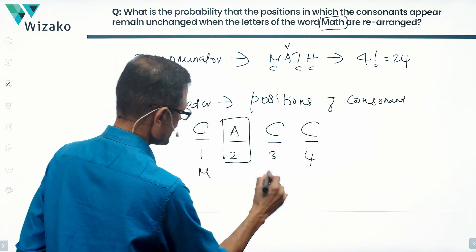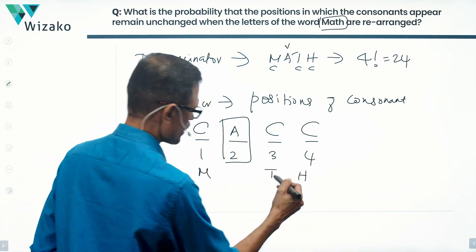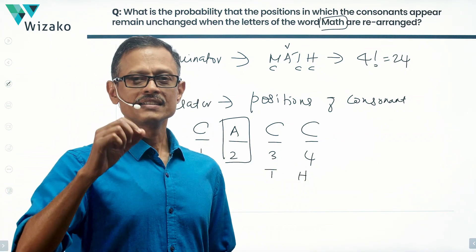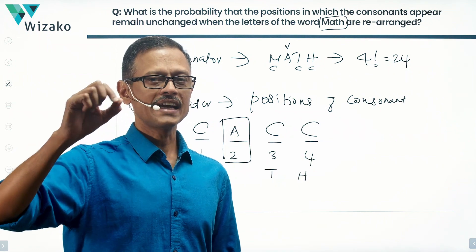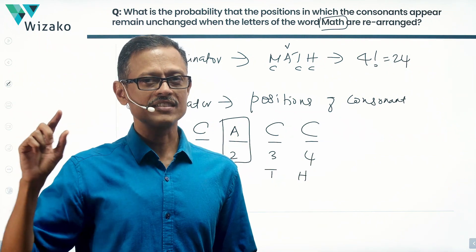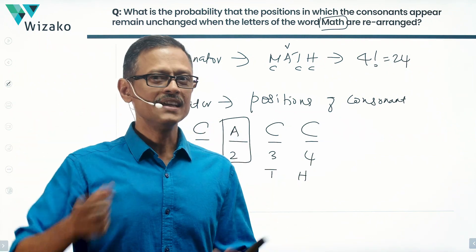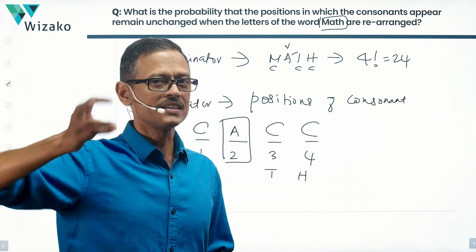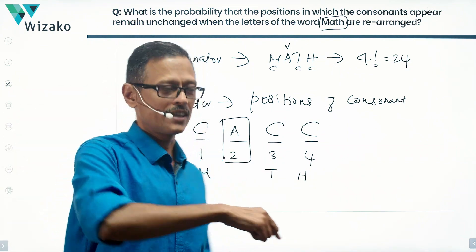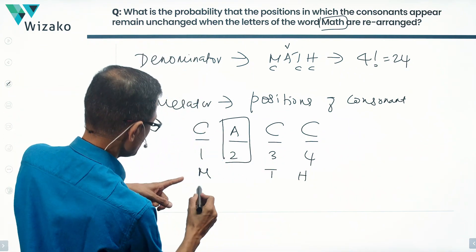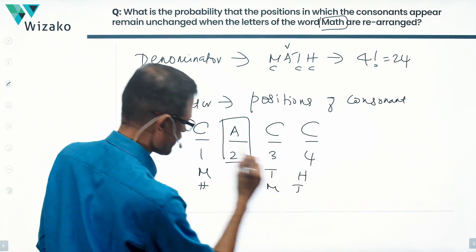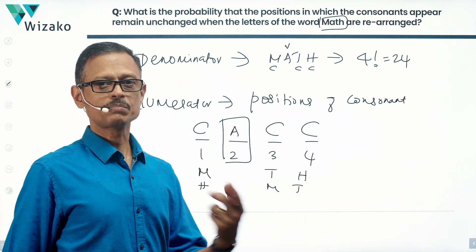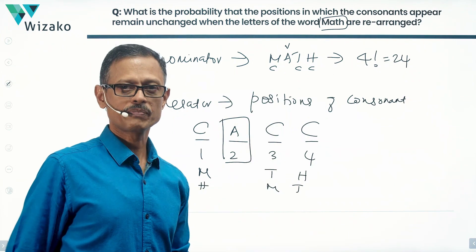So we have consonants M, T, and H. Should it be M, T, H itself, or can we reorder them? The question has not said that the first position is for M, the third is for T, and the fourth is for H — that would have been only one possibility. The question says the consonants should appear in positions one, three, and four, and they can appear in any order. So H, A, M, T is a perfectly valid accepted rearrangement.